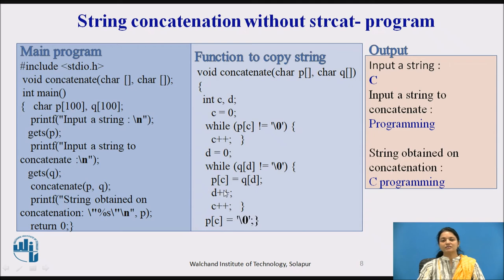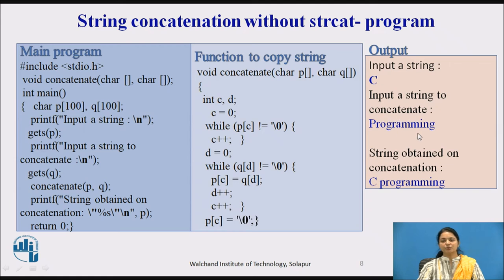Once the second string is completed, we stop all the loops. Now we will see how it happens: first, the user inputs string 'C', then inputs a string to concatenate — 'program'. The counter c starts at p, going through the first string.